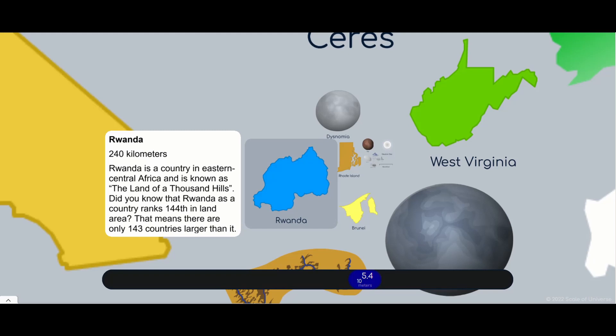Here's the country of Rwanda. Nice shape, don't you think? The land of a thousand hills.